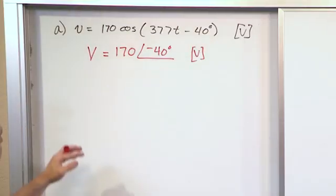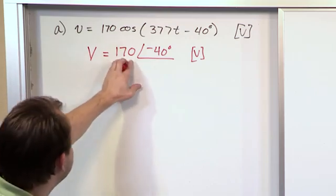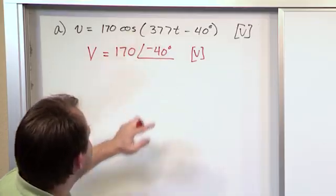This is the shorthand way. If your professor tells you write the phasor, that's all they want to see. They want to see the amplitude and the phase. Put this little bracket to illustrate that this is the phase angle there.